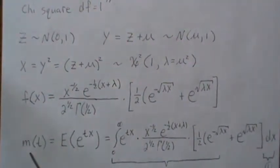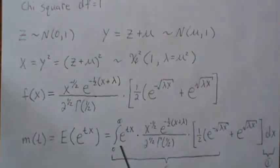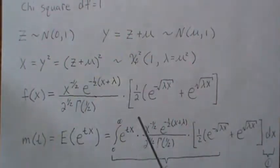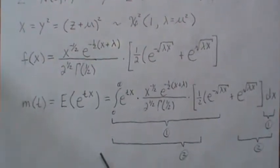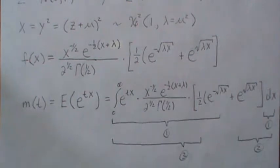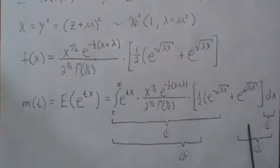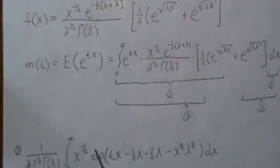Now to find the moment generating function, we take the expected value of E to the TX. And so what that says is we take E to the TX times the density integrated over all possible values. And then what's left is the moment generating function. But we're going to do this in piecemeal. So there's this plus here. So we could take this plus that, this plus that, and do two integrations. And that's what we're going to do. So we're going to call this piece 1 and this second piece 2.